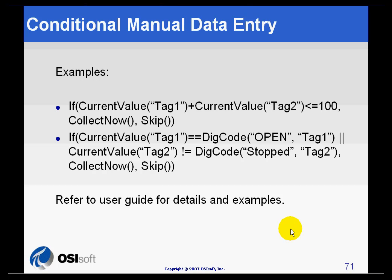As we saw in the last example, Conditional Manual Data Entry allows you to add a calculation to a tag or group to determine if it should be due for collection. This equation can pull in previous values of the current tag or current values of other tags and perform mathematical calculations on them using a set of supported functions.